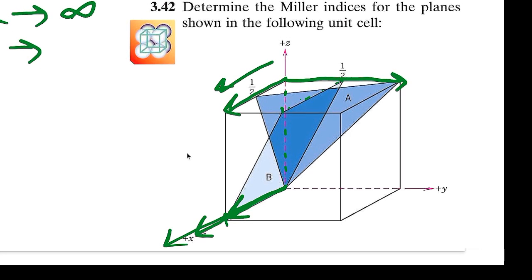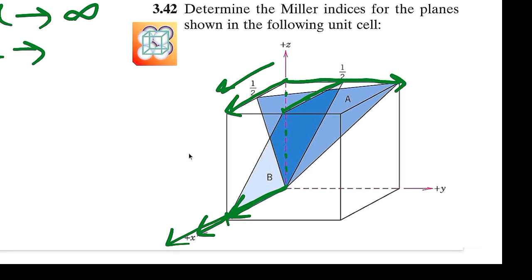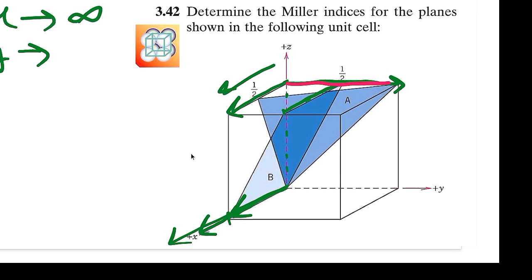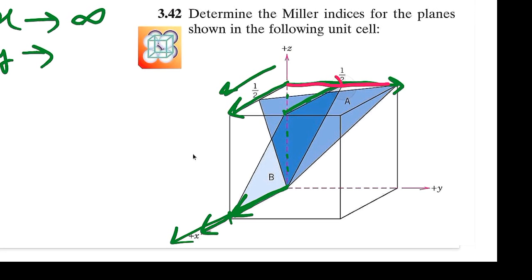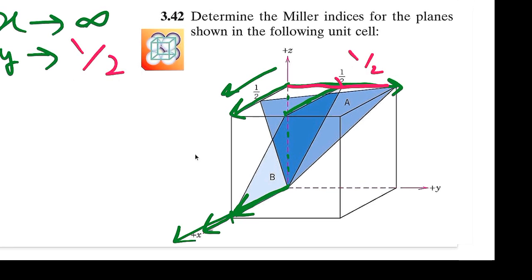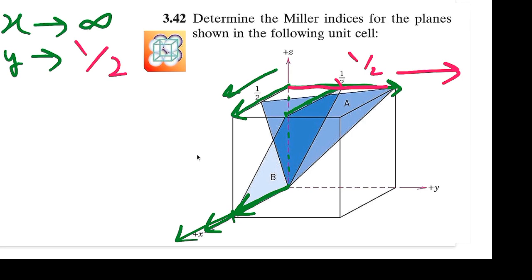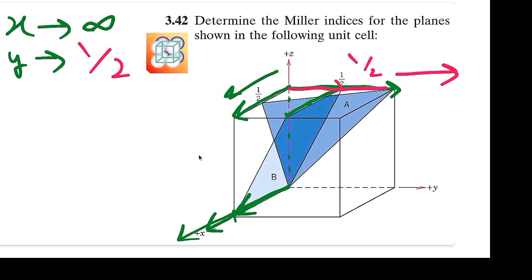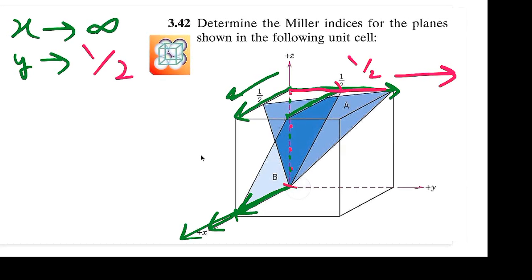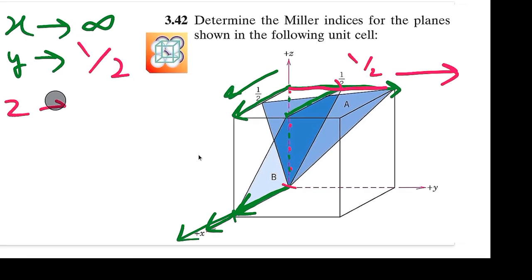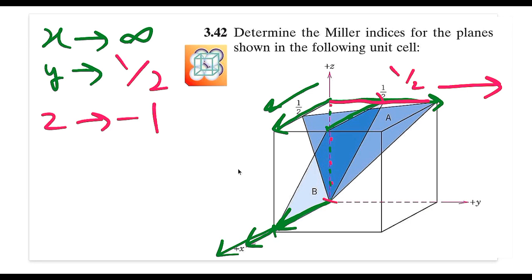We choose a new origin that allows us to find the y and z intercepts easily. With this new origin, the y-axis runs to the right and z-axis points vertically downward. Plane B cuts the y-axis at the halfway point, so the y-intercept is 1/2 (positive, since it's in the positive y direction). Plane B cuts the z-axis right at the corner point in the negative z-direction, so the z-intercept is −1.